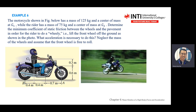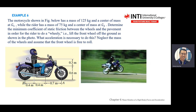We want to determine what is the minimum friction of the ground so that you can do this action — what acceleration is necessary to do a wheelie. Ignore the mass of the wheel and assume the front wheel is free to roll.